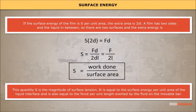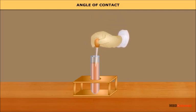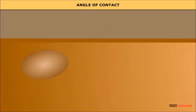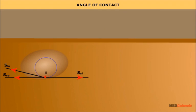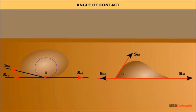This quantity S is equal to the surface energy per unit area of the liquid interface, and also equal to the force per unit length exerted by the fluid on the movable bar. Angle of contact: the surface of a liquid near the plane of contact with another medium is generally curved. The angle between the tangent to the liquid surface at the point of contact and the solid surface inside the liquid is termed the angle of contact.